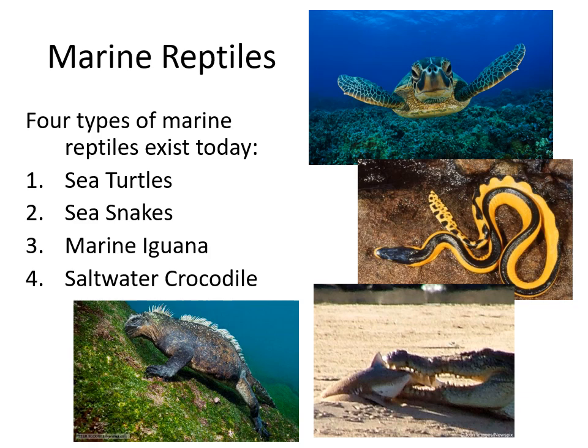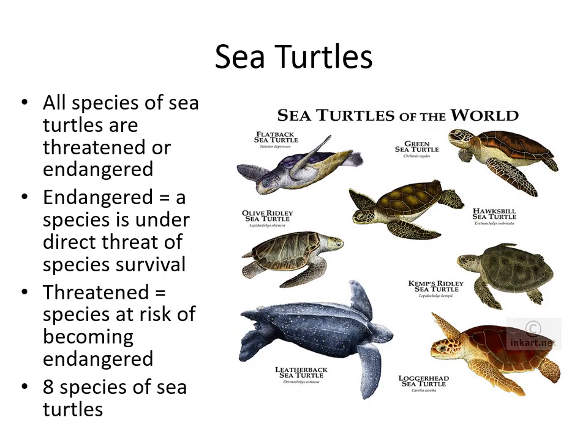Starting with sea turtles — all species of sea turtles are threatened or endangered throughout the world. An endangered species is one that is very likely to go extinct if things don't change. A threatened species is at risk of becoming endangered, so they are generally better off than an endangered species, but heading toward that same fate.